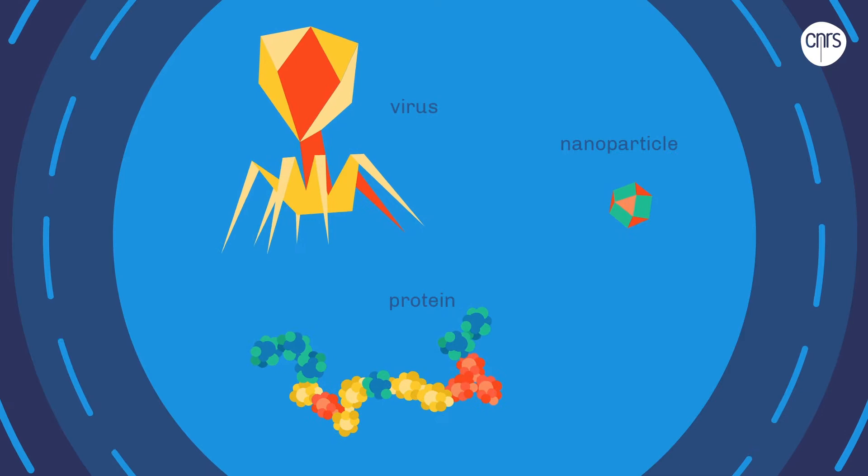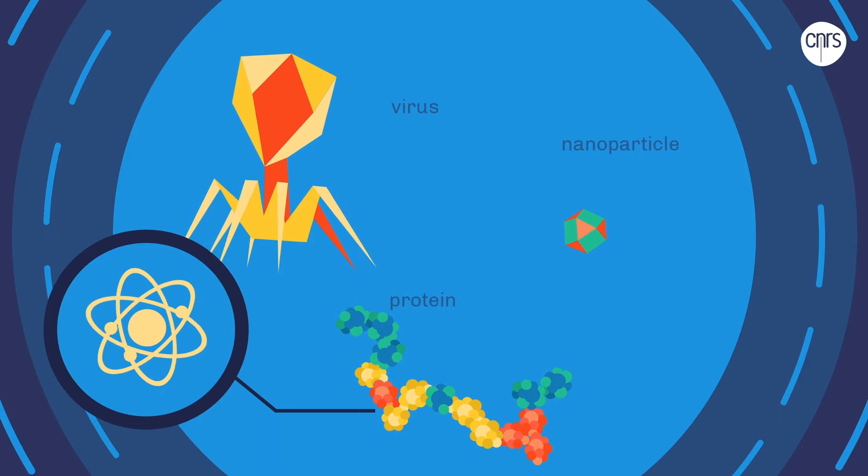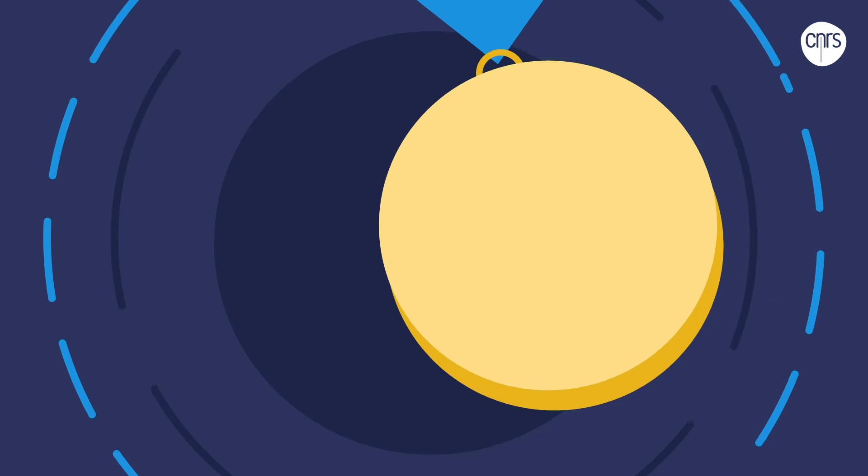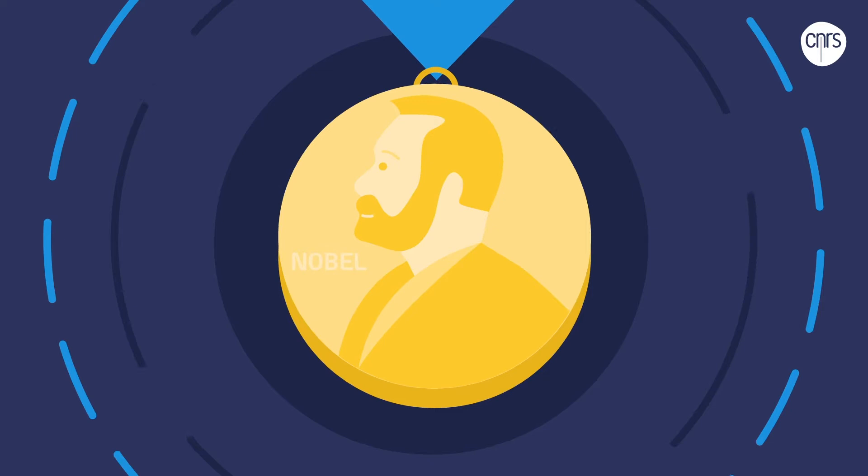And yet today, we can observe them at the atomic scale thanks to cryogenic electron microscopy. Its developers, Jacques Dubochet, Joachim Frank, and Richard Henderson, received the Nobel Prize in Chemistry in 2017.